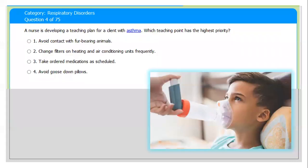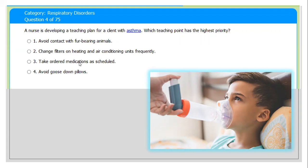Next question: a nurse is developing a teaching plan for a client with asthma. Which teaching point has the highest priority? Number one, avoid contact with fur-bearing animals; number two, change the filter on the heating and air conditioning unit frequently; number three, take ordered medications as scheduled; number four, avoid other triggers listed.